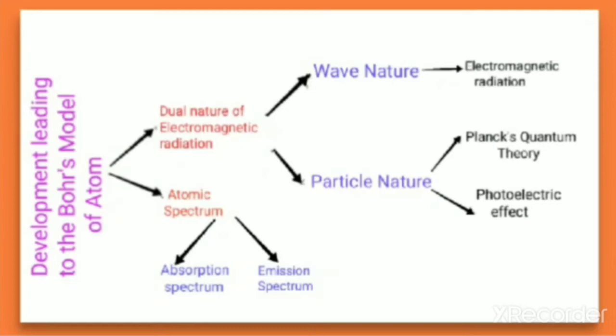These two developments are: the dual nature of electromagnetic radiation, and atomic spectrum. These two concepts played a very important role for Bohr in formulating his model — the Bohr model of atom. So before discussing the Bohr model, we need to discuss all these concepts in detail.